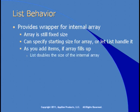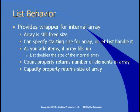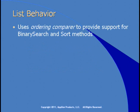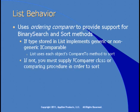Since the list provides a wrapper for an internal array, you can specify a starting size or let the list class handle it. As you add items and the array fills up, the list doubles the size of the internal array. The count property returns the number of elements placed in, and the capacity property returns the actual size of the array — generally those two values won't be the same. The list uses an ordering comparer to provide support for both binary search and sort methods.